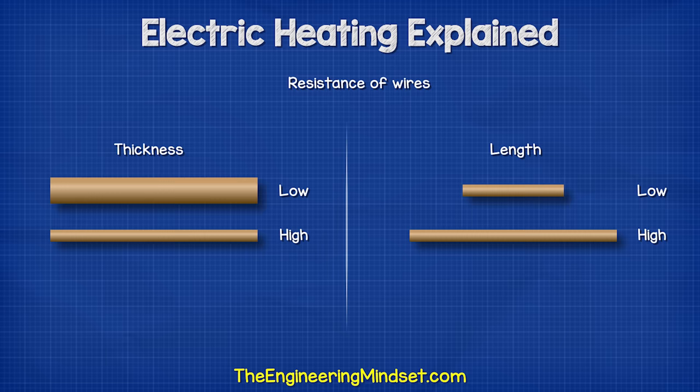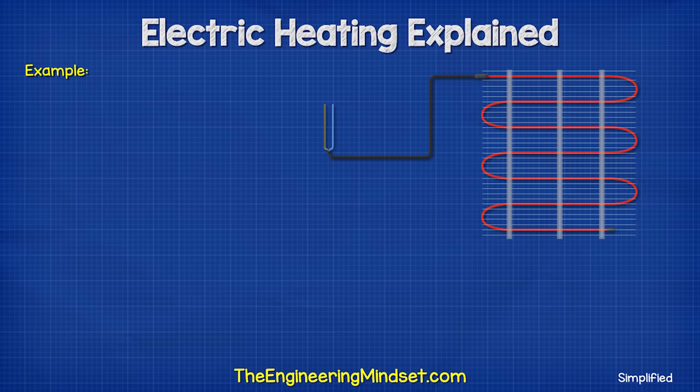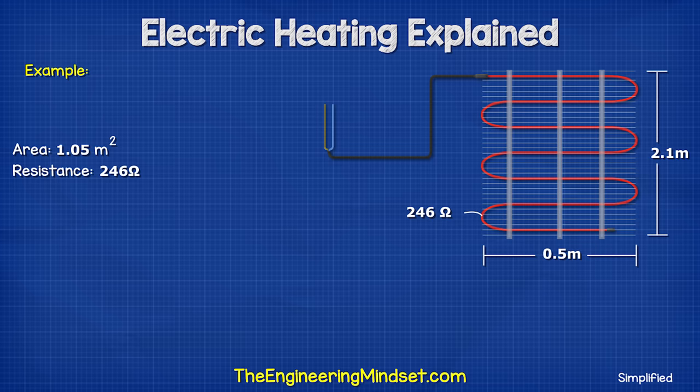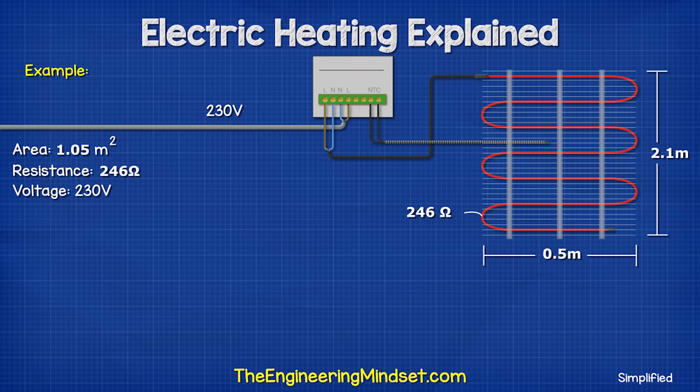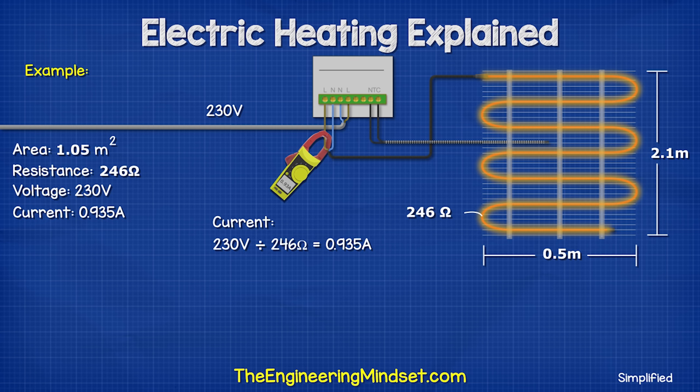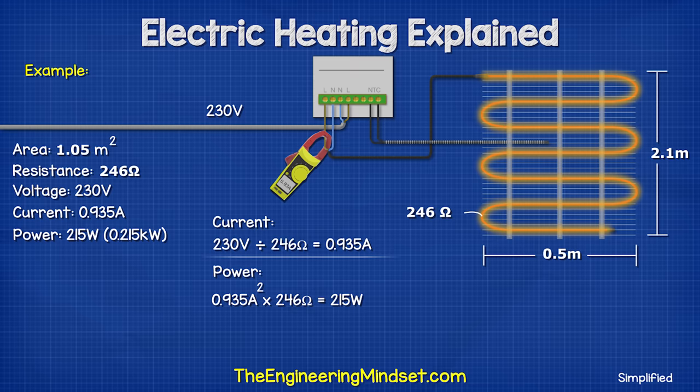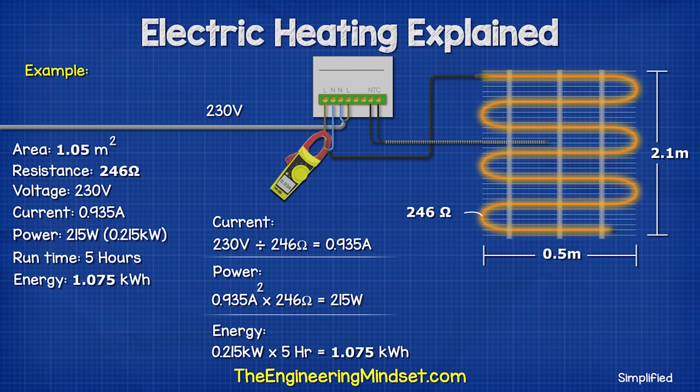The thickness and the length of a wire affects its resistance. Short, thick wires have less resistance than long, thin wires. That's why distribution cables are thick, to reduce the resistance and energy losses. For example, this heating mat covers one square meter and contains around 13 meters of cable. The cable has a resistance of 246 ohms. If we connected this to a 230 volt supply, the current demand will be roughly 0.935 amps. The power demand is therefore 215 watts, or 0.215 kilowatts. So if we ran this for 5 hours, it would produce 1.07 kilowatt hours of heat, and so we would pay for 1.07 kilowatt hours of electricity.